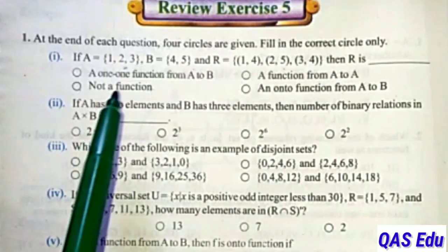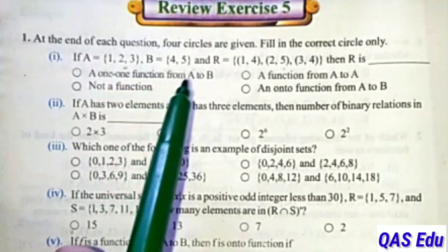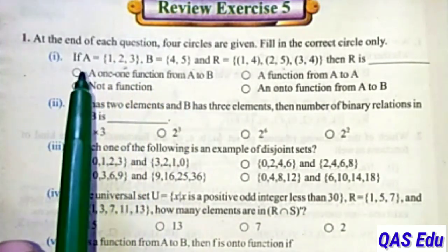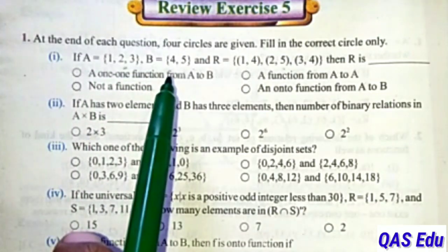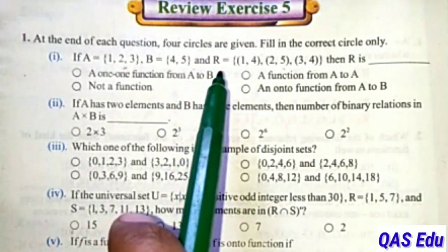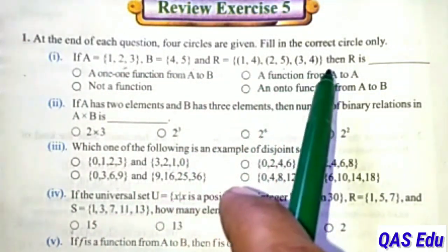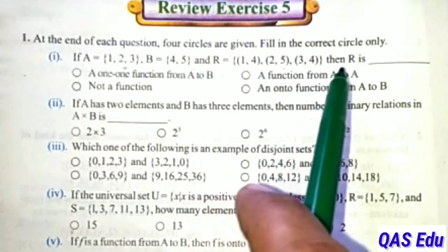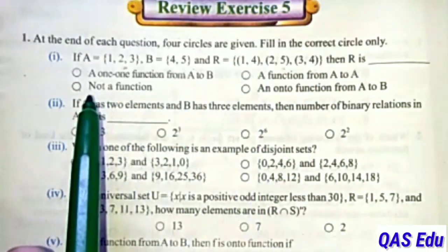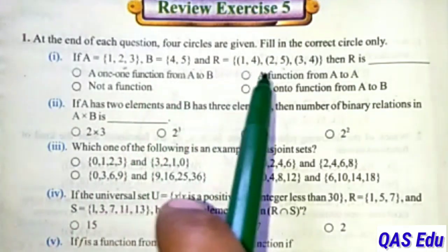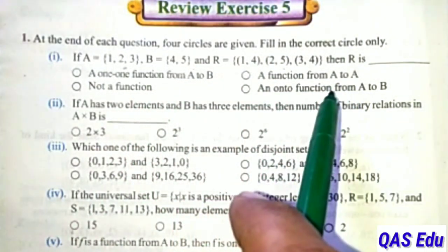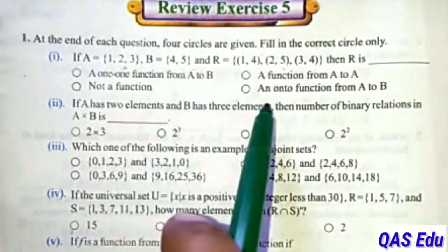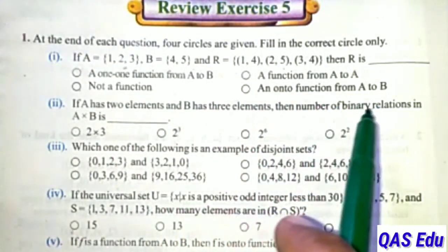Question 1: If A is equal to {1, 2, 3}, B is equal to {4, 5}, that was set A has 1, 2, 3 and B has 4, 5. And relation R is equal to {(1,4), (2,5), (3,4)}. Then R is: A 1-1 function from A to B, A function from A to A, Not a function, An onto function from A to B.